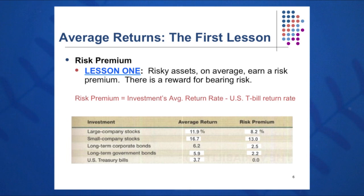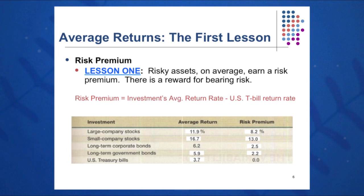For small company stocks, it has a very high risk premium, which you would expect — high risk, high return. Taking the 16.7% average return minus the T-bill rate gives a risk premium of 13%. Remember that number because it is significant and so large, and it strengthens the fundamental rule of finance that high return is associated with high risk. Long-term corporate bonds have a risk premium of only 2.5%, and long-term government bonds have a risk premium of only 2.2%. Obviously, T-bills carry no risk premium because we'd be subtracting the risk-free rate from itself.